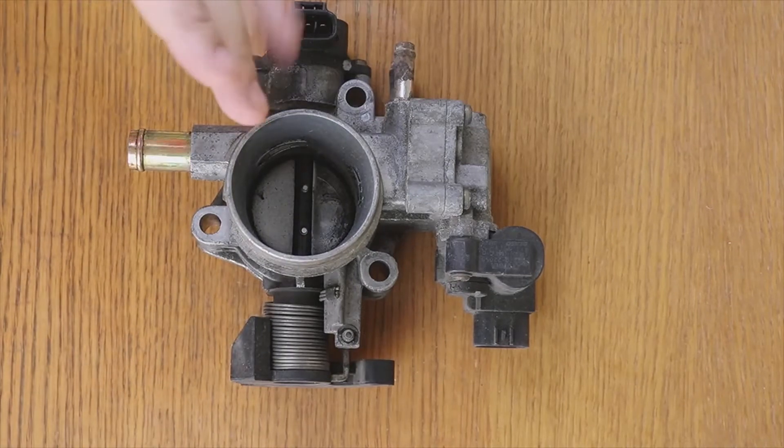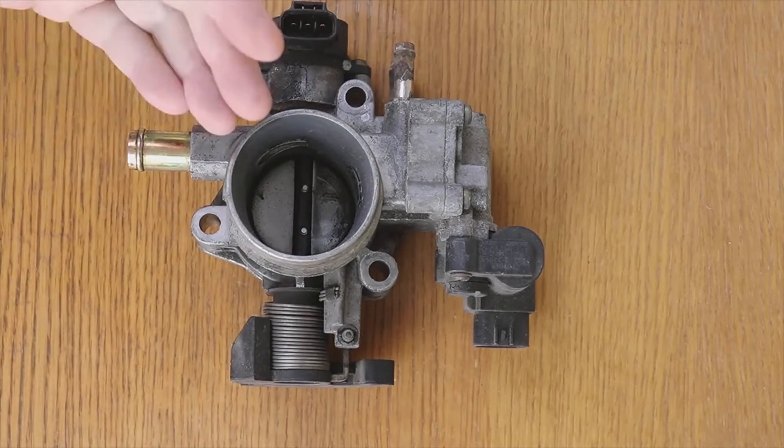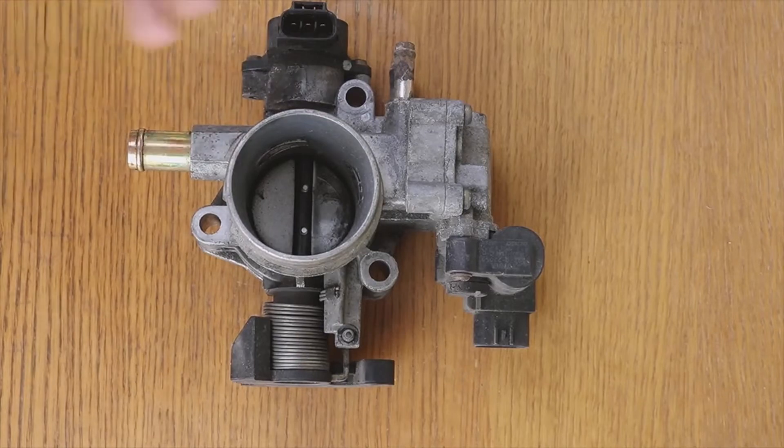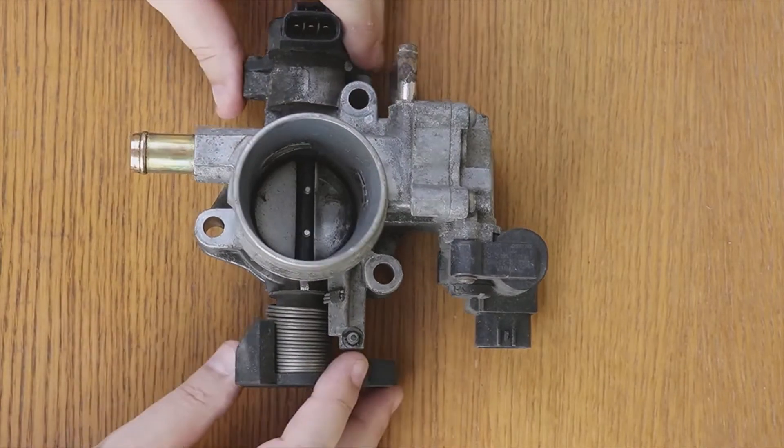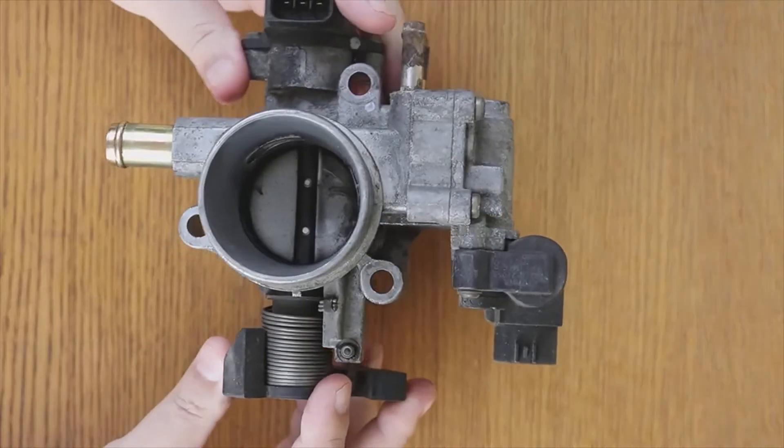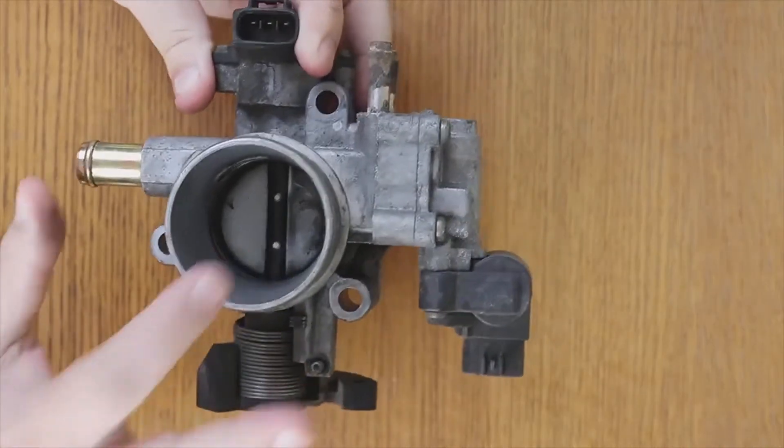In a gasoline vehicle, the throttle valve's function is to control the air inlet and intake. When you have the vehicle stopped, this valve will always be closed. If you see that it is open, there is a problem there.